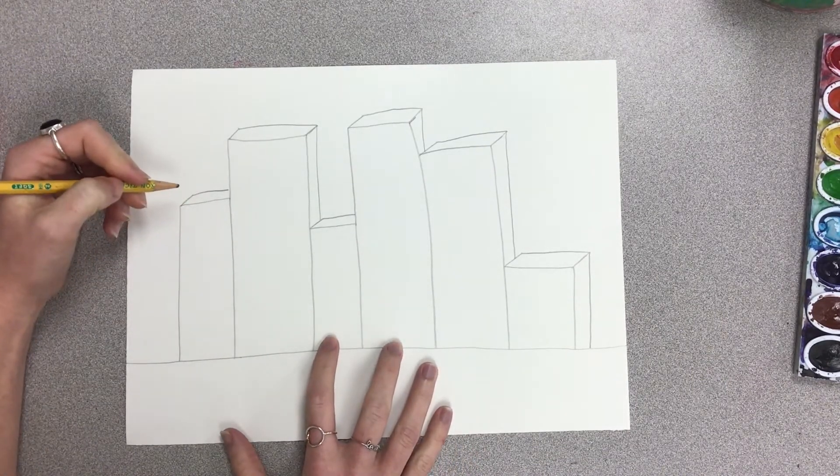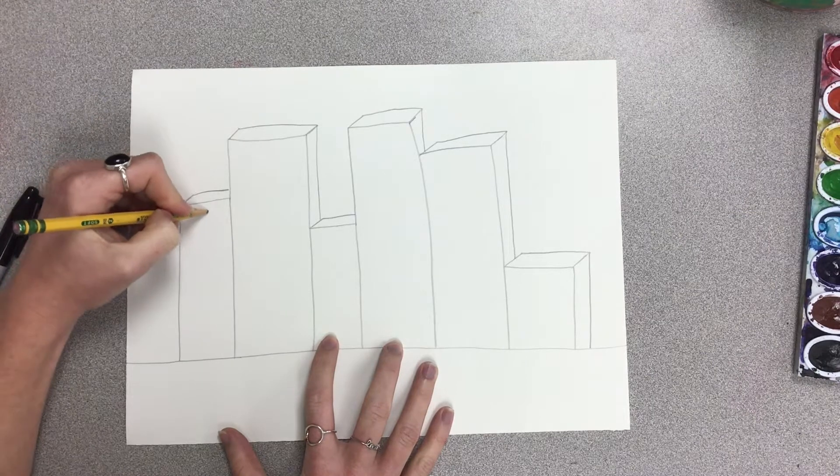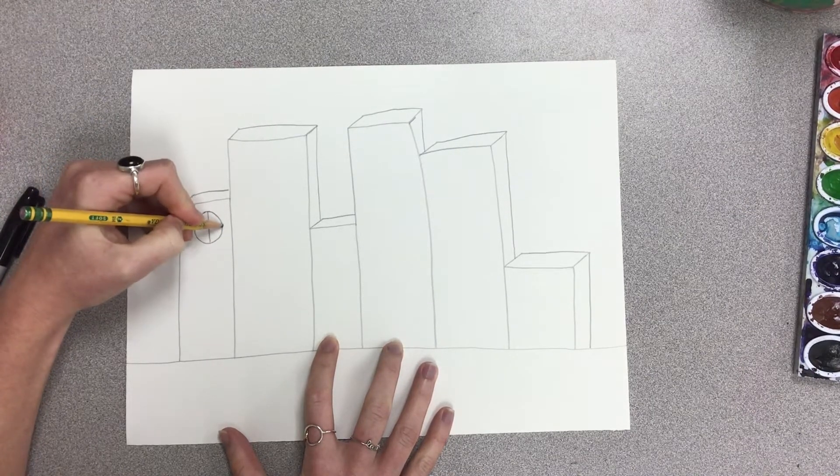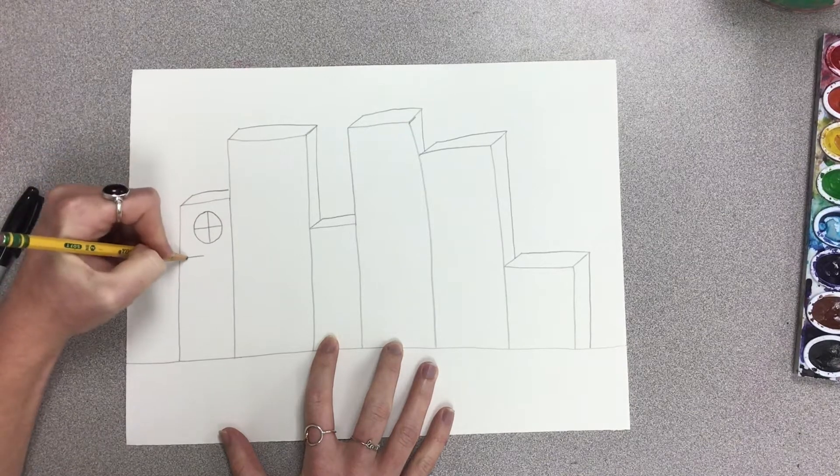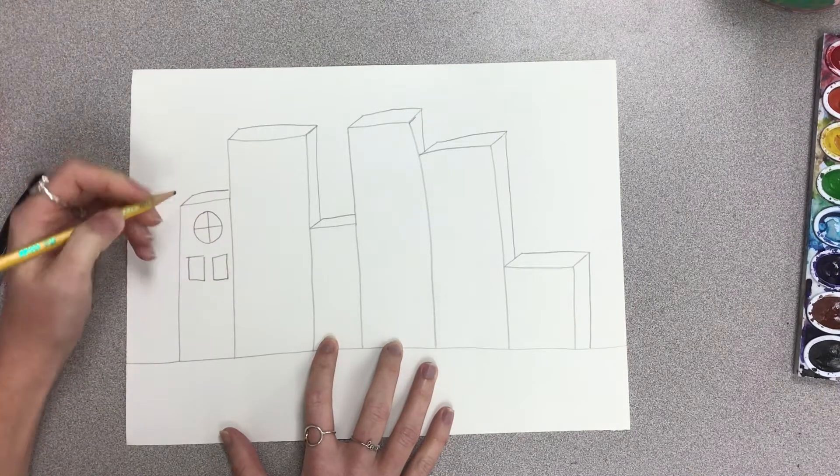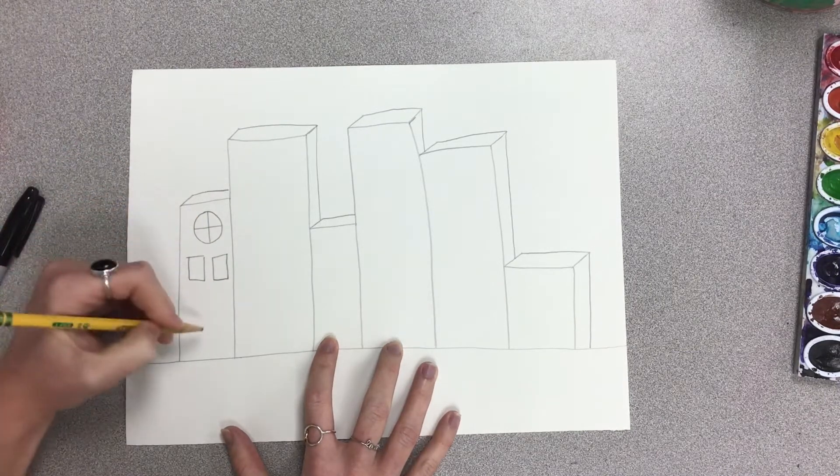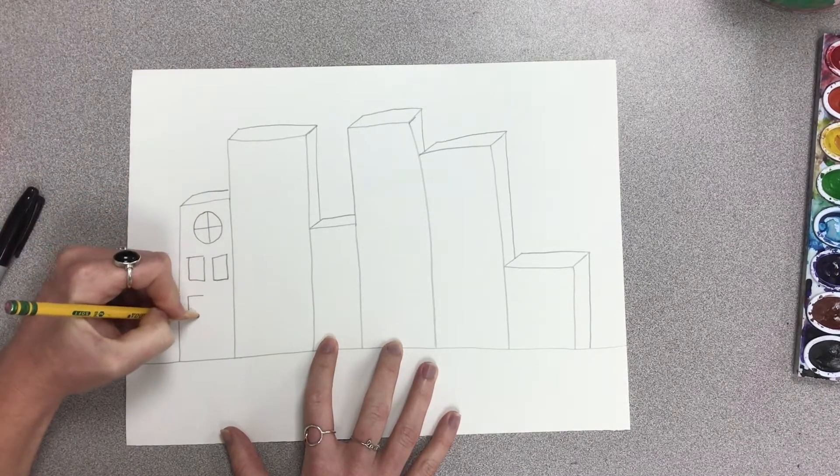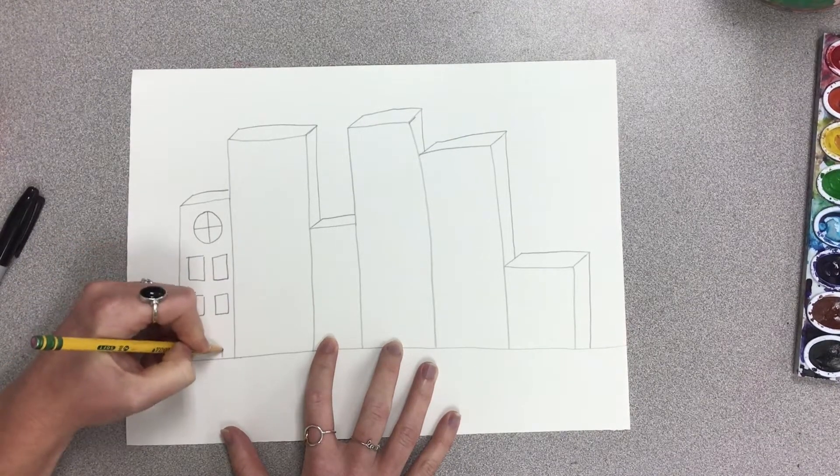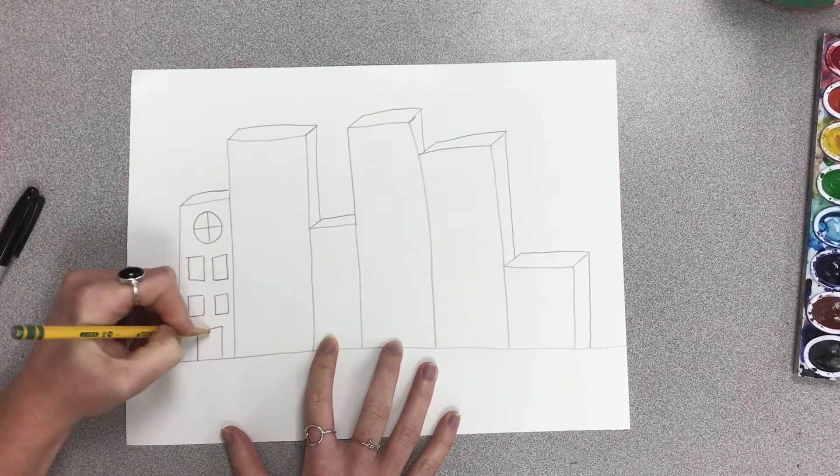Now is the part where we can decorate our buildings and add details. We can have different kinds of windows. We could do circles for windows, rectangles for windows, squares for windows, we could do a window that has an arch to it, however you want to design and decorate your buildings and add details.